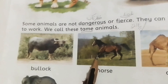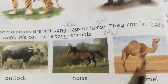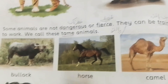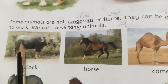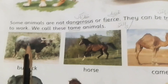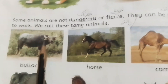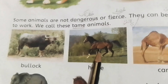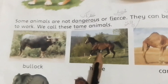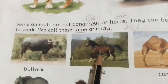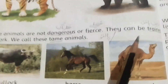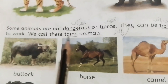Bulls are trained and they go straight to their home on their own. Similarly horses are trained, and camels are trained for work. A cart is attached behind them. If we let them go, they will go straight to their home or to the place where work is done. These animals are called tame animals — those who are trained for work.